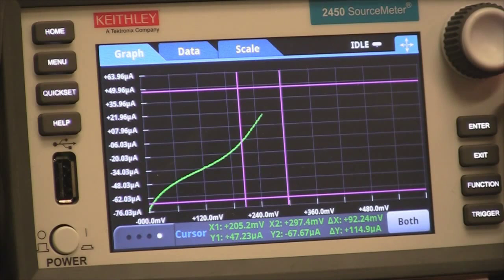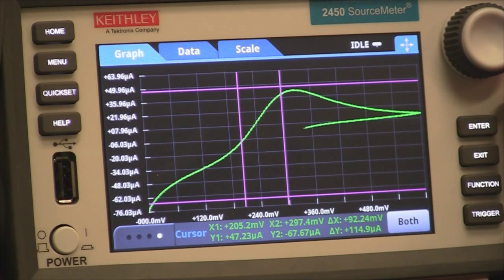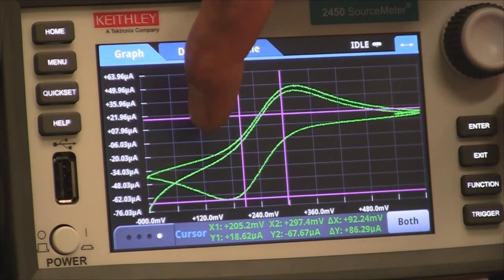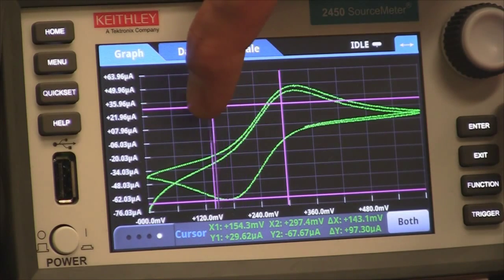So you can see the voltammogram running. You can see the first anodic peak. You can see the reduction peak. And at any time during the experiment or after, you can use the cursors and define the peaks or current levels.